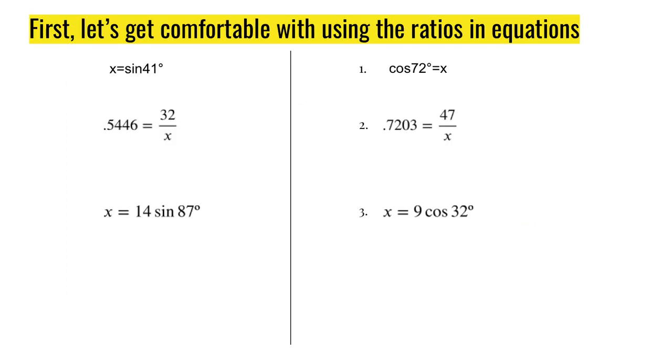Before we start using these ratios a little bit more, I want you to get comfortable using them inside of equations and doing some algebra with them. On the left, I have some examples, and on the right, I have some problems that I'm going to ask you to do. In order to convert the sine of 41 degrees into a number, I need my trig table or a calculator that has the trig functions on it. Desmos is an online calculator that has these trig functions. Just make sure that it's in degree mode.